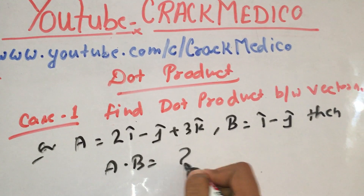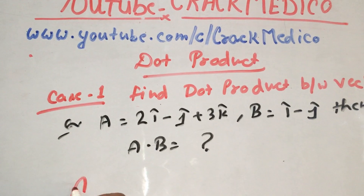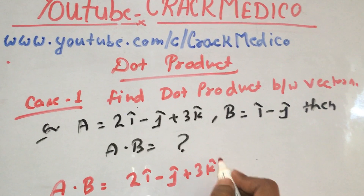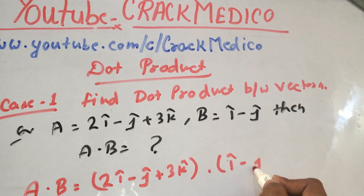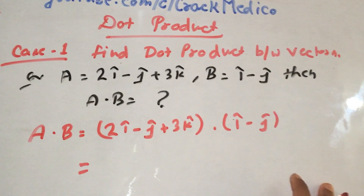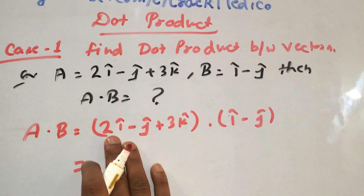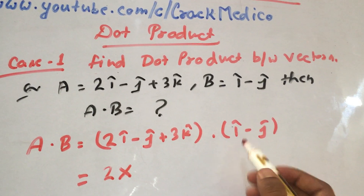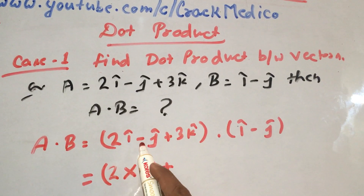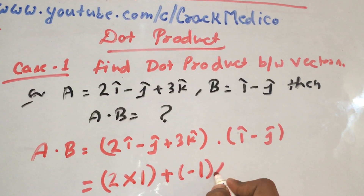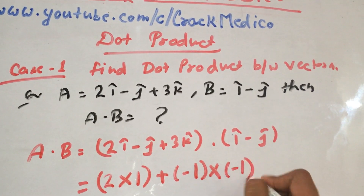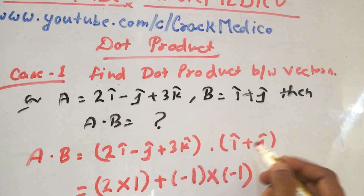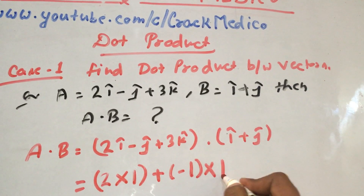So A·B equals (2i minus j plus 3k) · (i minus j). During the dot product, we multiply the coefficient of i in both vectors: coefficient of i in the first vector is 2, coefficient of i in the second vector is 1, so 2 into 1. Plus the coefficient of j in the first vector is minus 1, into the coefficient of j in the second vector, which is also minus 1, giving plus 1.